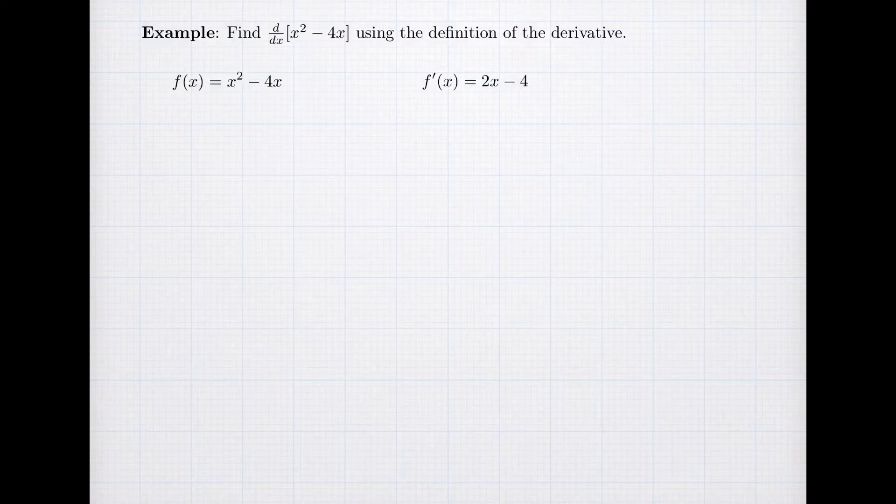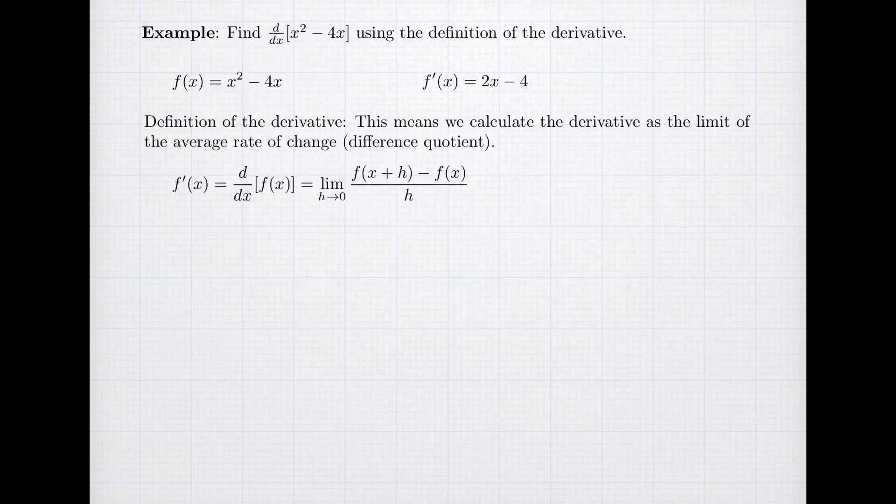So we need to find out why this is true using the definition of the derivative. So let's see what we get. The definition of the derivative is always defined as the limit of the average rate of change. So here, this fraction is the average rate of change. It's also called the difference quotient.